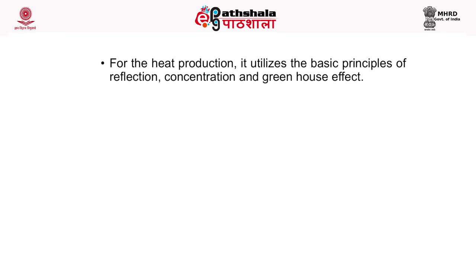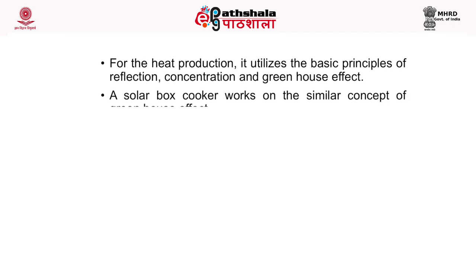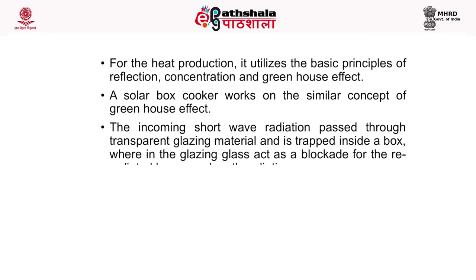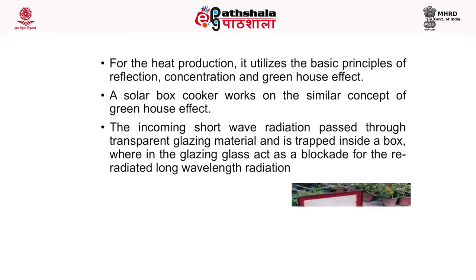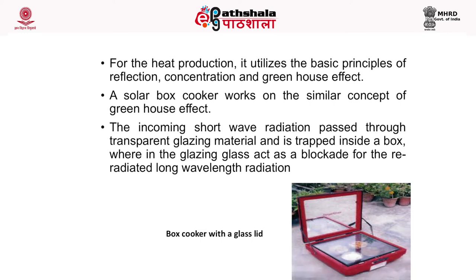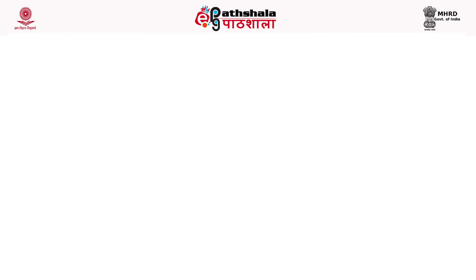The principle of a solar cooker: for heat production it utilizes the principles of reflection, concentration, and the greenhouse effect. A solar box cooker works on the greenhouse effect — incoming short-wave radiation passes through transparent glazing material and is trapped inside a box, where the glazing glass acts as a blockade for re-radiated long-wavelength radiation, and this heat trap is used for cooking.